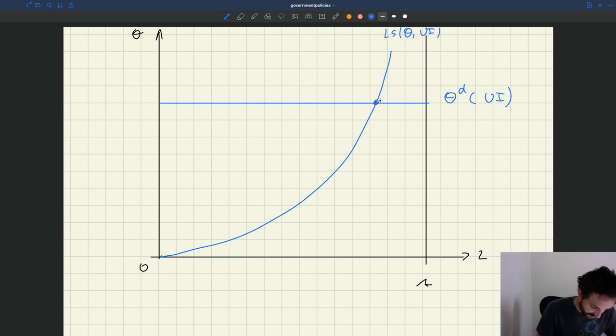All right, so where is our equilibrium? The equilibrium is here. What is employment here? Employment is here in the original equilibrium. We have tightness here, that's the setup.